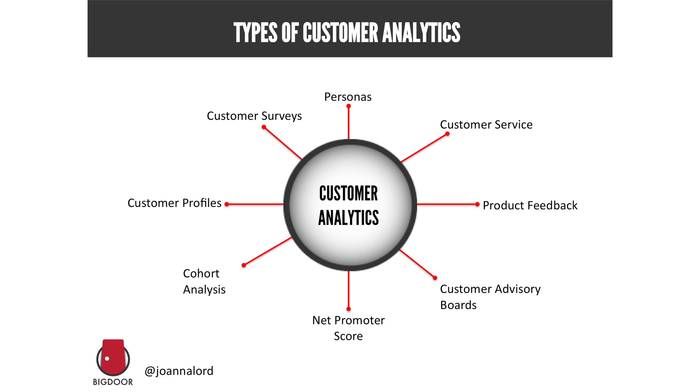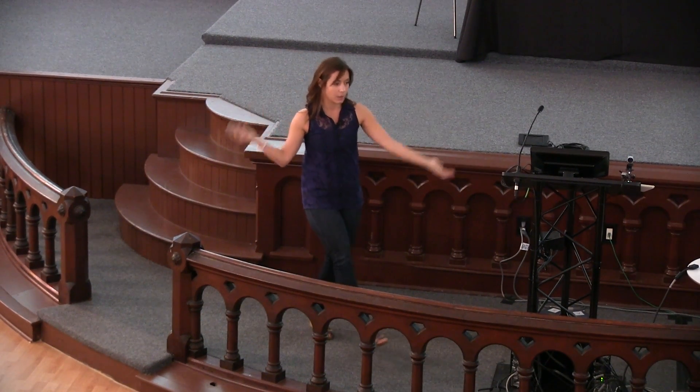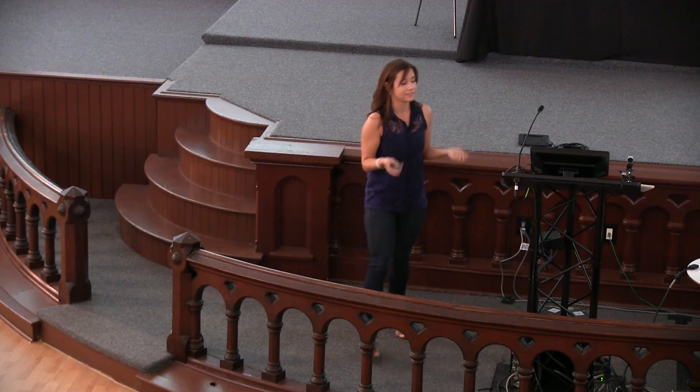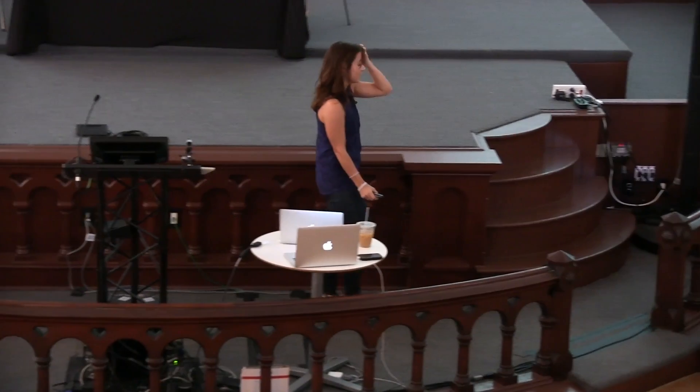Net promoter score — somewhat outdated, somewhat crappy, but I look at all data points as good as long as I can benchmark them against themselves and know the limitations. The NPS is a one-to-ten survey asking how likely someone is to promote your brand to friends — you throw out the middle and look at the polar extremes. You should be running some sort of sentiment analysis even if it's primitive. I think this section is going to get a huge overhaul in the next year or two — lots of people are working on analytics suites around customer sentiment.